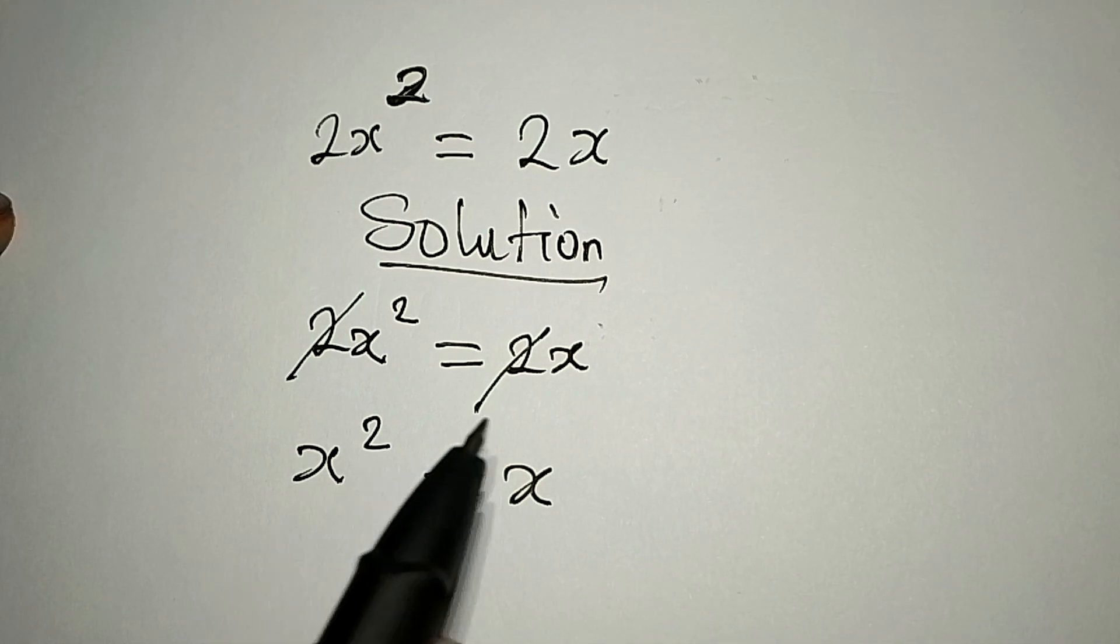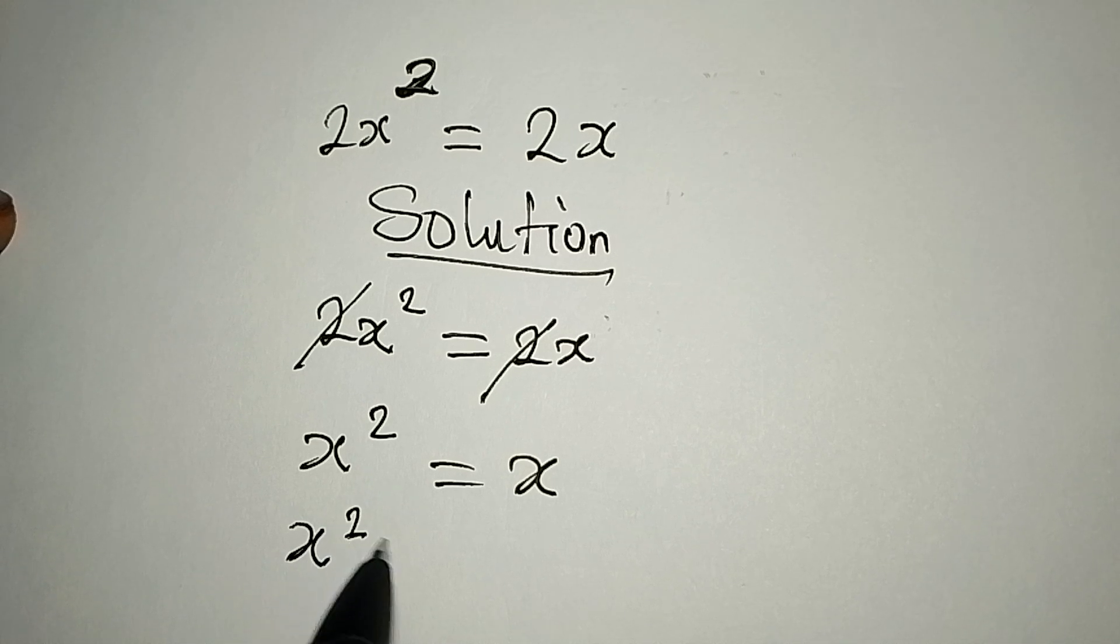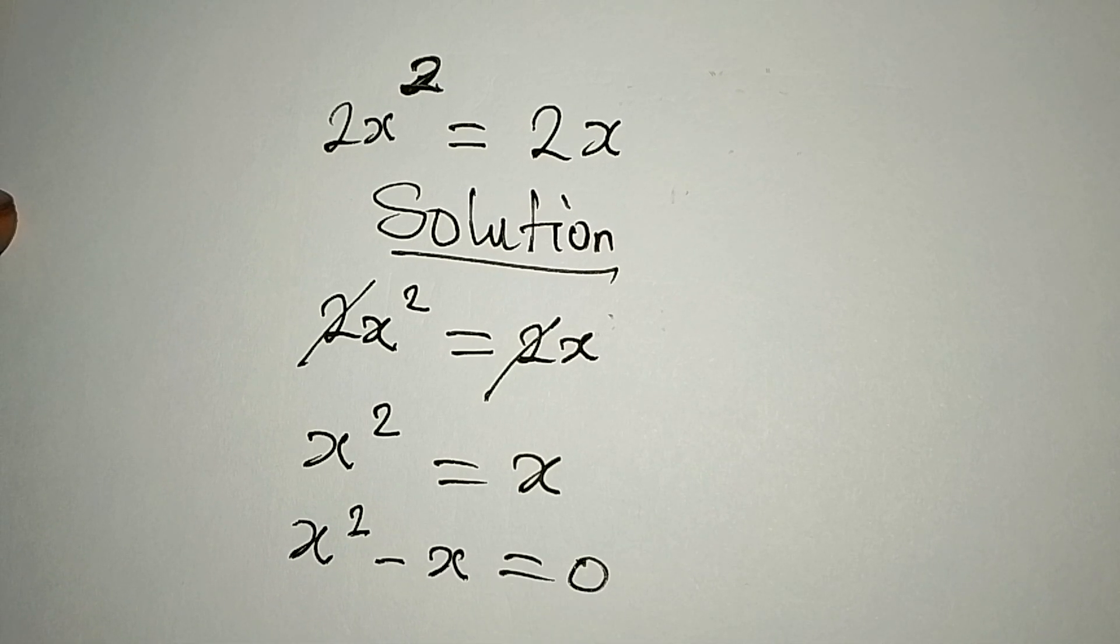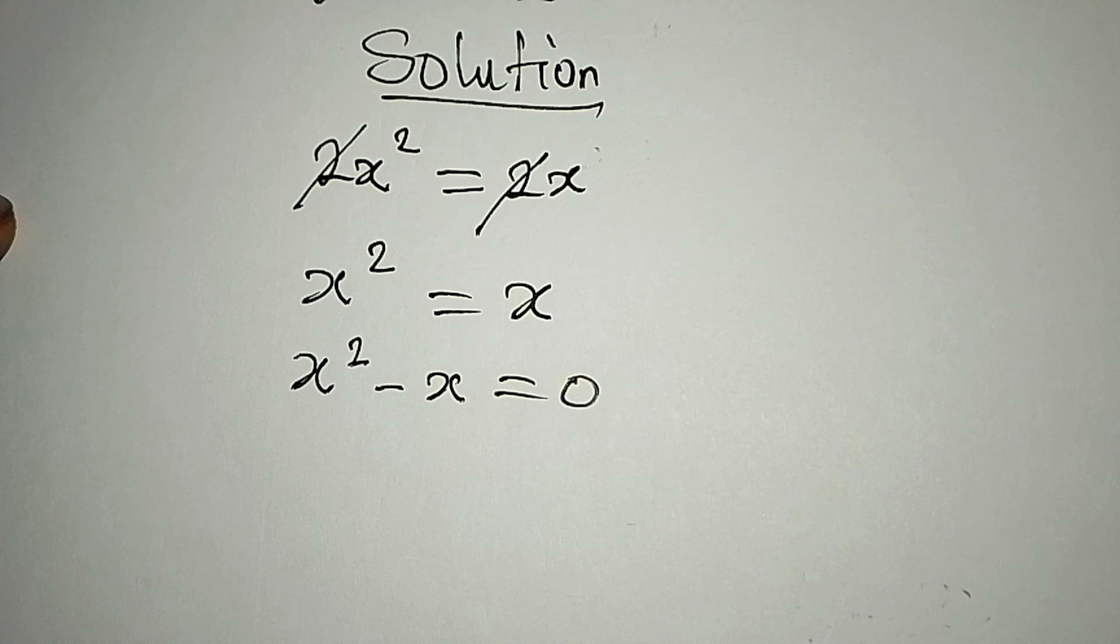Do not cancel one of the x from here. You would rather take x to the left, so we have x squared minus x equals zero.